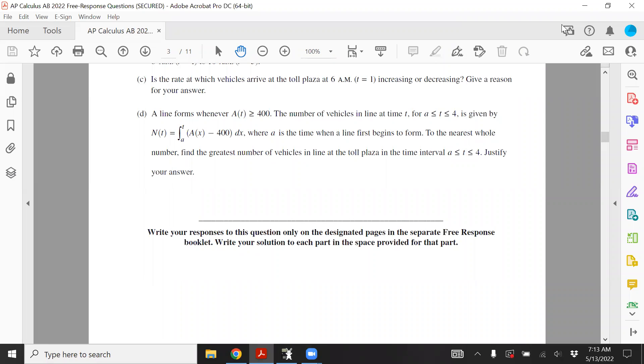So here, they give you a new function, the number of vehicles from T equals A to T equals 4. We don't know what A is, but apparently, that's when a line begins at 4. So it's when the traffic gets really bad. You really start seeing more of a pileup at that time. Probably around maybe 8 o'clock, 9 o'clock. So A is the time when the line begins to form. And it's A(X) minus 400. So that's when A(T), the rate of cars, is greater than 400. If you have a lot of cars coming, you'll probably have a line, right? Because the toll plaza can't handle, and the lanes can't handle all that flow. So nearest whole number, find the greatest number of vehicles in the line at toll plaza. And that interval will justify your answer.